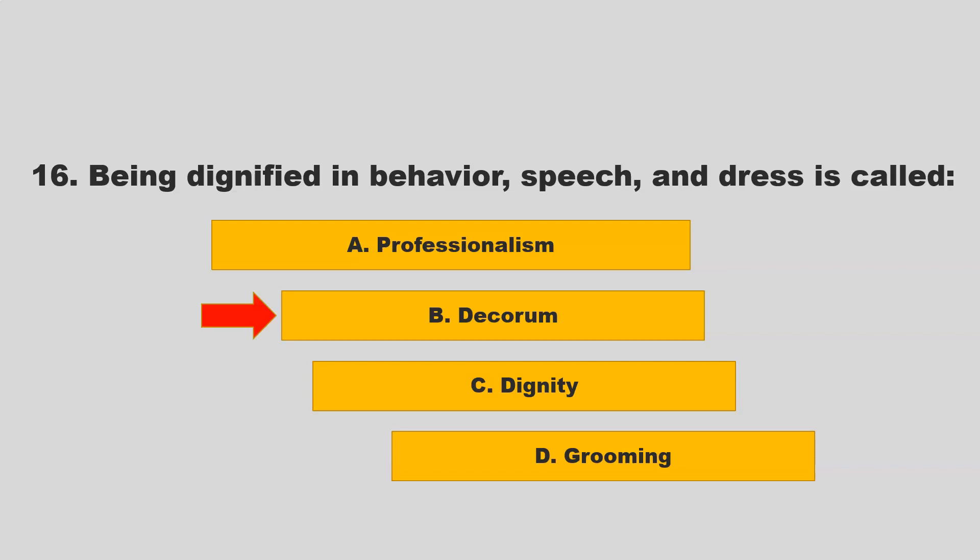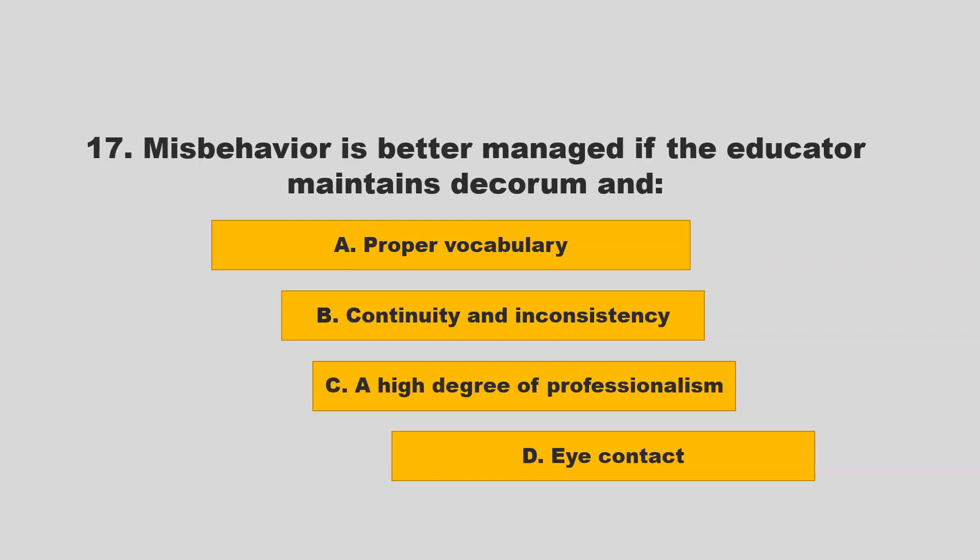Being dignified in behavior, speech, and dress is called decorum. If you chose B, decorum, you are correct. Misbehavior is better managed if the educator maintains a high degree of professionalism. If you chose C, a high degree of professionalism, you are correct.